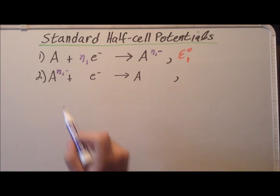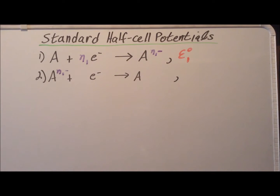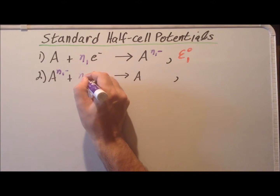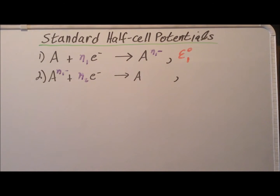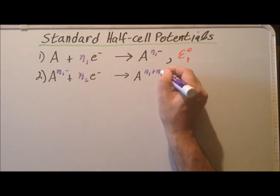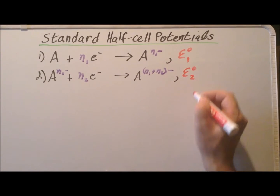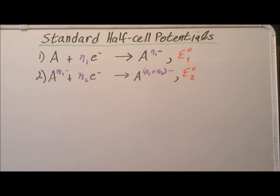Now, in the second half-cell reaction, the product of the first reaction — A with a minus N sub 1 charge — gains additional electrons. In this step it gains N sub 2 electrons. Since it previously had a minus N sub 1 charge, the charge on the species is now N sub 1 plus N sub 2 minus. The standard reduction potential for step 2 is E naught sub 2.